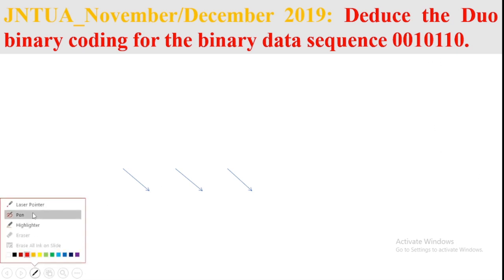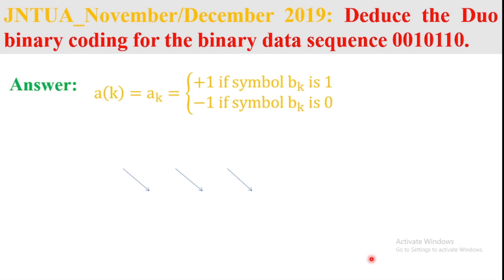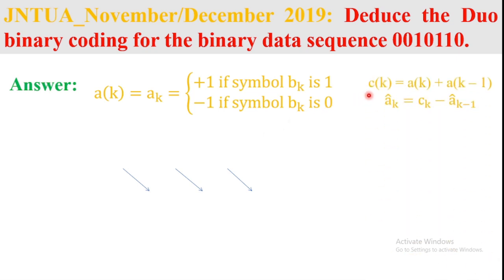Coming to the solution, we know that the two-level sequence amplitude a(k) is plus 1 if symbol b(k) is 1, and a(k) is minus 1 if symbol b(k) is 0. The output of the Duo binary coder is c(k) = a(k) + a(k-1), where a(k-1) is the previous sample value.